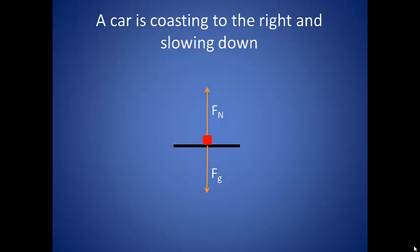Our car is coasting to the right. This implies that there is not a force acting in that direction, but it is slowing down, so there must be some force acting to the left. This is the kinetic friction force acting between the tires and the ground.